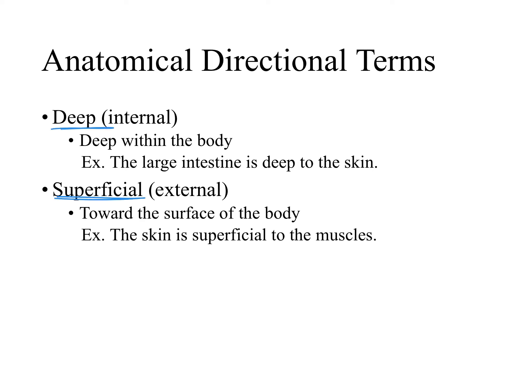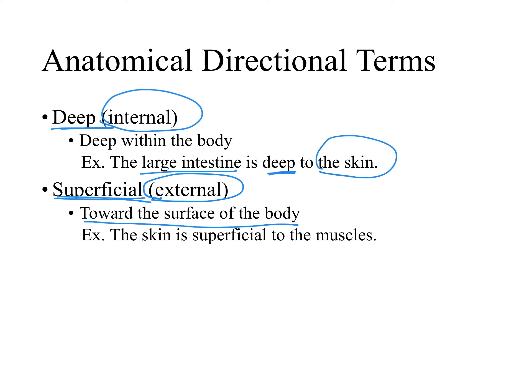Deep and superficial are terms that are opposite to each other. Superficial is something that is close to the external aspect of the body, towards the surface of the body. Deep is when we are referring to something that is close to the internal aspect of the body. For example, we can say that the large intestine is deep to the skin — obviously, it's internal.